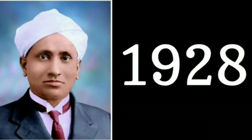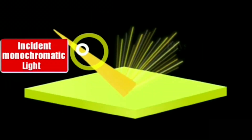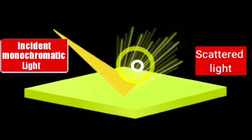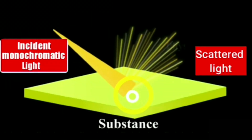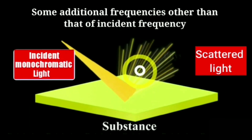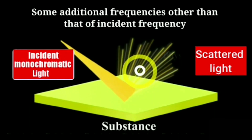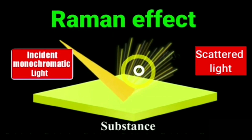In 1928, Sir C.V. Raman discovered experimentally that monochromatic light is scattered when it is allowed to pass through a substance. The scattered light contains some additional frequencies other than that of the incident frequency. This is known as the Raman effect.